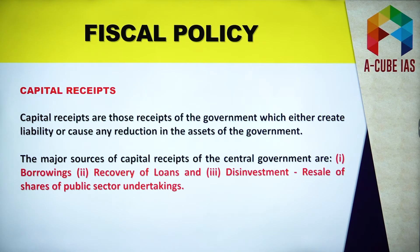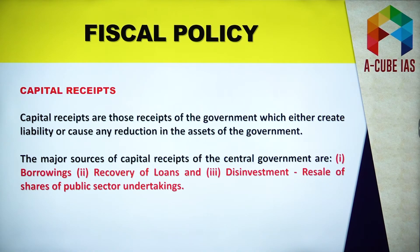Now let's talk about capital receipts. Revenue receipts do not create any liability and do not cause any reduction in the assets of the government. But capital receipts create liability and also cause reduction in the assets of the government. The major sources of capital receipts of the central government are borrowings — including domestic borrowing, which means raising funds within the country, and external borrowings, which means borrowing money from foreign governments or international bodies like IMF and World Bank.